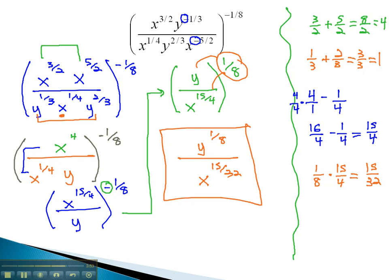By using the same exponent properties we always have, we can simplify some quite complex-looking expressions with rational exponents by keeping in mind order of operations and either adding, subtracting, or multiplying our exponents.